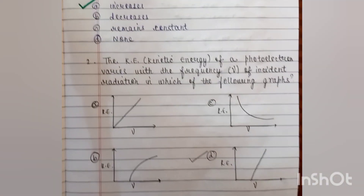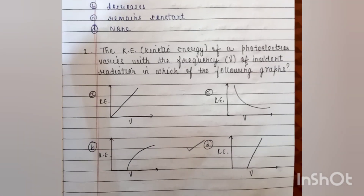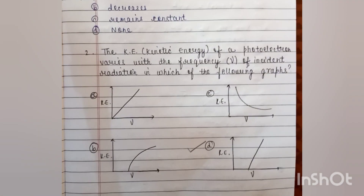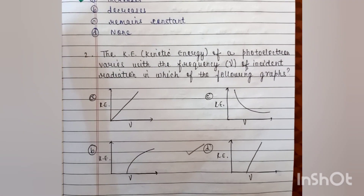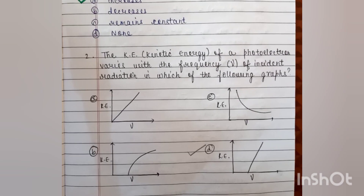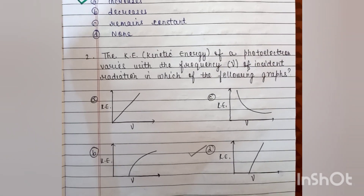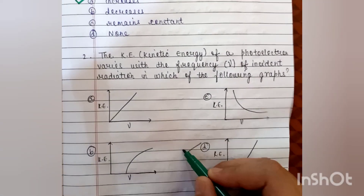Second question: the kinetic energy of a photoelectron varies with the frequency of the incident radiation — which of the following graphs shows this relationship? The correct answer is D.